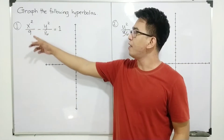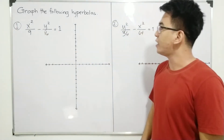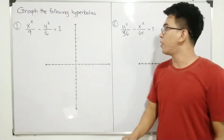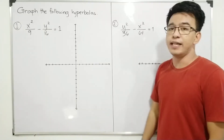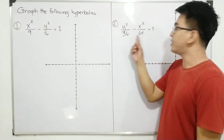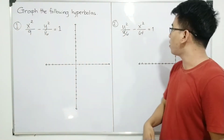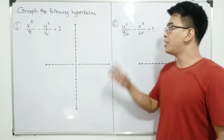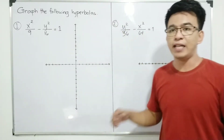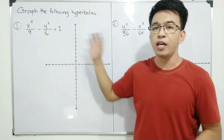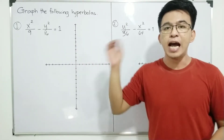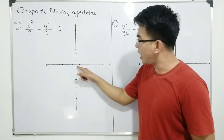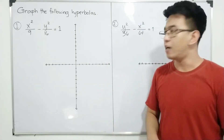x squared over 9 minus y squared over 16 is equal to 1. And we have y squared over 36 minus x squared over 64 is equal to 1. As you can see, based on my previous video, this format of the equation — the center is at the origin.